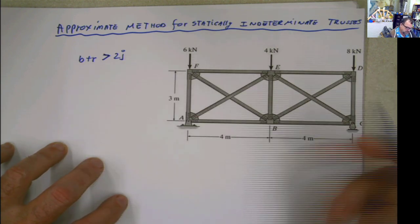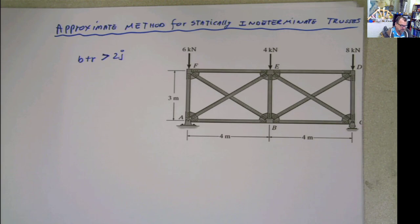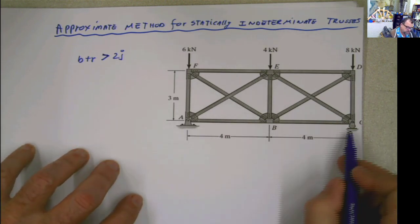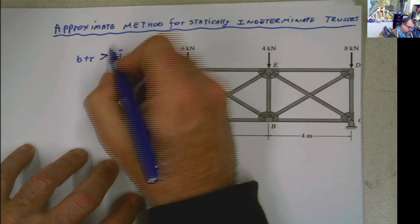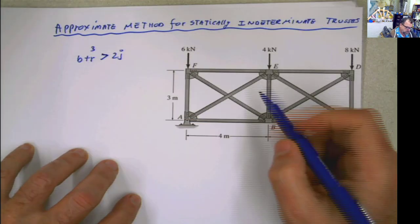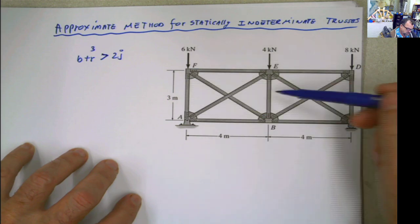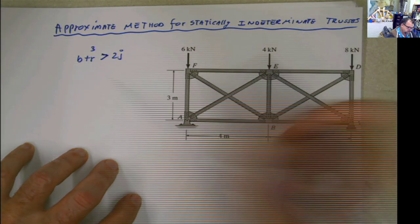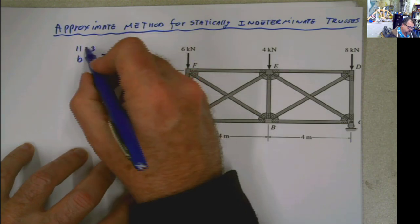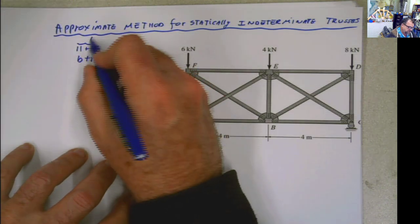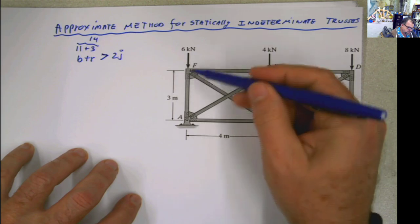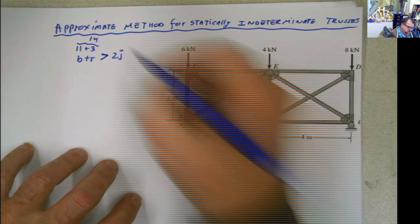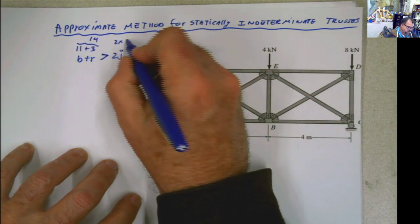So let's just really quick check this truss and see what happened. So number of reactions, you have 2 plus 1, I'm sorry, 3. 3 reactions here. Number of bars, you have 1, 2, 3, 4, 5, 6, 7, 8, 9, 10, 11. So meaning you have 14 here. And the number of joints is 1, 2, 3, 4, 5, 6. So 2 times 6, 12.